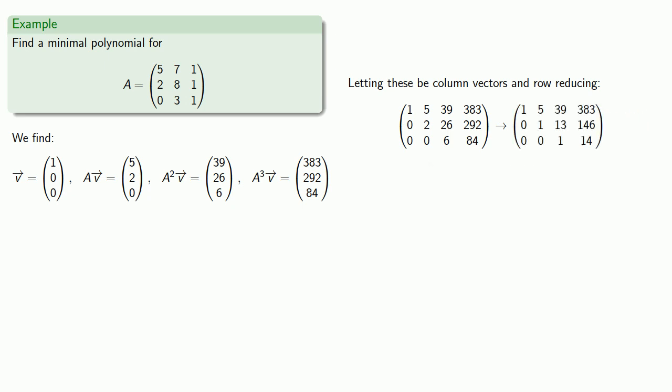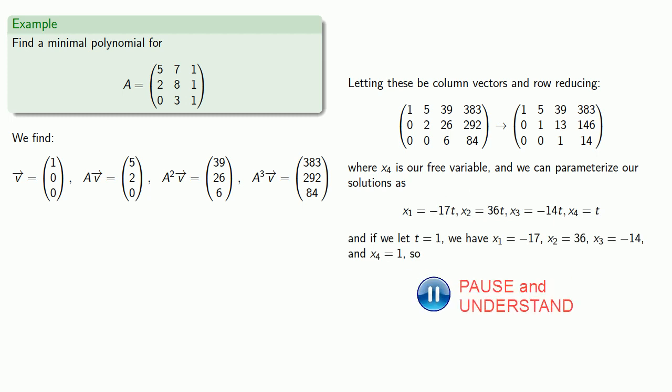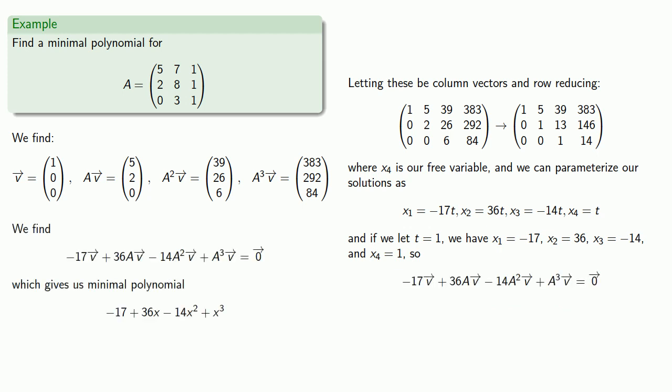We find that x_4 is our free variable, and we can parameterize our solutions. And if we let T equals 1, we'll get a set of solutions. A linear combination equal to 0. And a corresponding minimal polynomial.